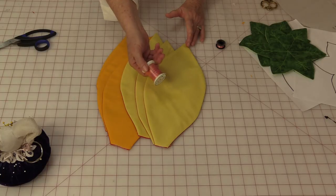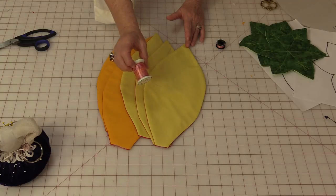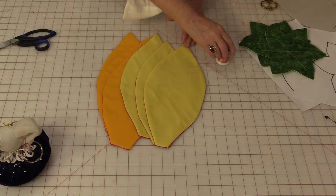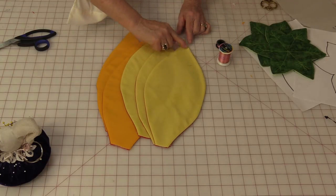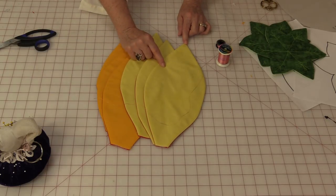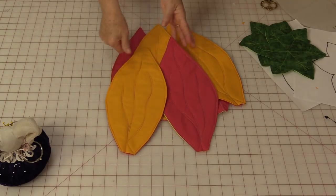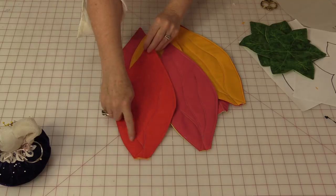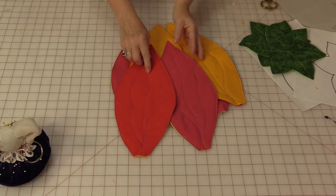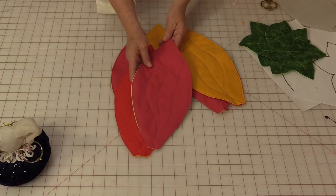And I'm going to use a variegated thread. This one is from Superior Threads, and it has a lot of different colors in it so I think it'll look really nice. I'm going to stitch, and then I'm going to do just three lines right down the center of this petal. I now have six petals with these long lines in them, and those lines make them look more like flower petals.